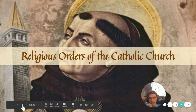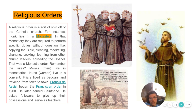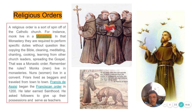Religious Orders of the Catholic Church: a religious order is a sort of spin-off of the Catholic Church. For instance, monks live in a monastery, where they are required to perform specific duties without question, like copying the Bible, cleaning, meditating, chanting, cooking, learning from other church leaders, and spreading the gospel — that was the monastic rule. Monks (men) live in monasteries, nuns (women) live in convents, and friars lived as beggars and traveled from town to town. Francis de Assisi began the Franciscan order in 1200, later earned sainthood, and asked followers to give up their possessions and serve as teachers.